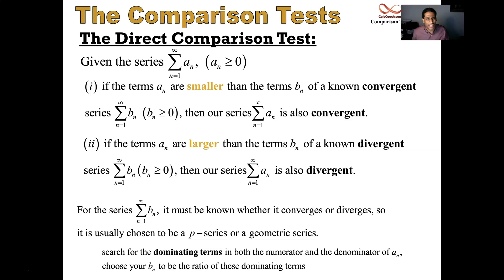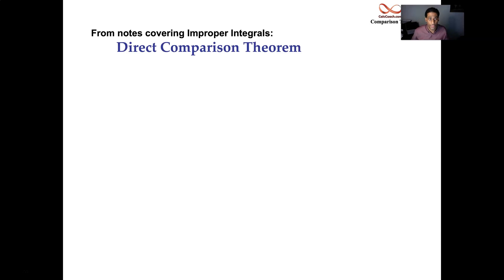So let's take a close look at why the direct comparison test works the way it does. Let's go back and remember the direct comparison theorem for improper integrals. Remember we had this nice graph that really solidified it for us. We have a function f of x who's always bigger than a function g of x. And you don't really know which one you're given. You have to figure it out based off of what the inequality is.